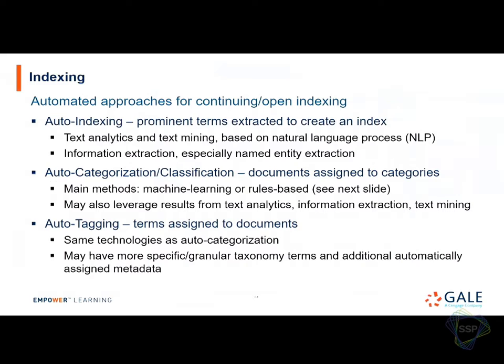For automated indexing — and Margie will talk about this more — we hear of auto-indexing, which tends to refer to text extraction or data mining, pulling concepts out of the text, which may or may not involve a controlled vocabulary. Auto-categorization or auto-tagging does involve a controlled vocabulary. There are two main methods: machine learning and rules-based.